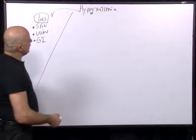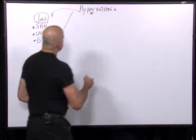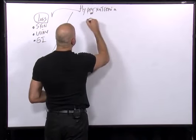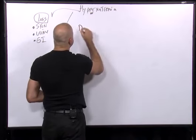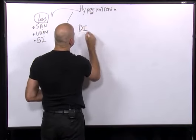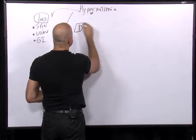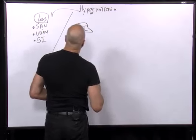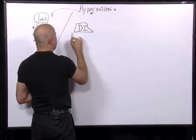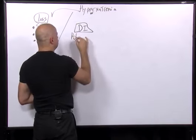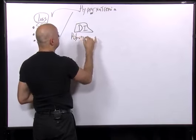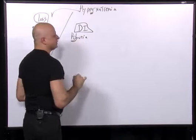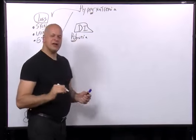Now, the other part that causes hypernatremia is diabetes insipidus. Diabetes insipidus causes polyuria — urinating a lot.